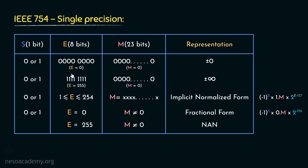To sum it up, in the exponent field when we have 0, based on the mantissa we can either represent 0 or the fractional form. When the mantissa has all 0s, based on the sign bit we represent positive 0 or negative 0. If the 23-bit mantissa has any pattern other than all 0s with exponent 0, it represents the fractional or denormalized form. When the exponent field has all 1s representing decimal value 255, if the mantissa has all 0s it represents positive or negative infinity, and if the mantissa has any other pattern it represents Not a Number. Anything else is represented in implicit normalized form.